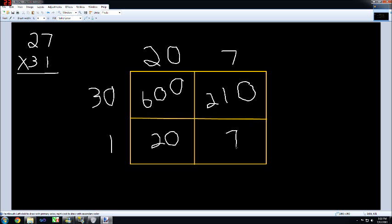Now we're not done yet. We need to add all the numbers in the box together to find the product or answer to our multiplication problem. I always list the numbers from greatest to least. So the first number we have is 600. Next number is 210.